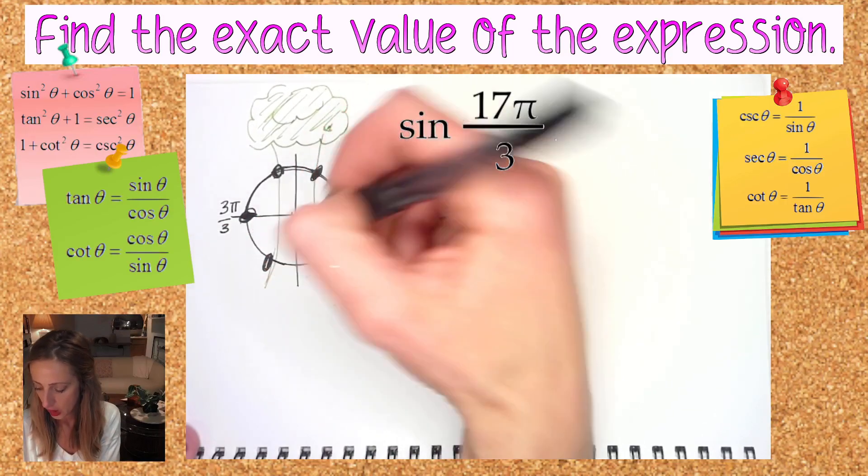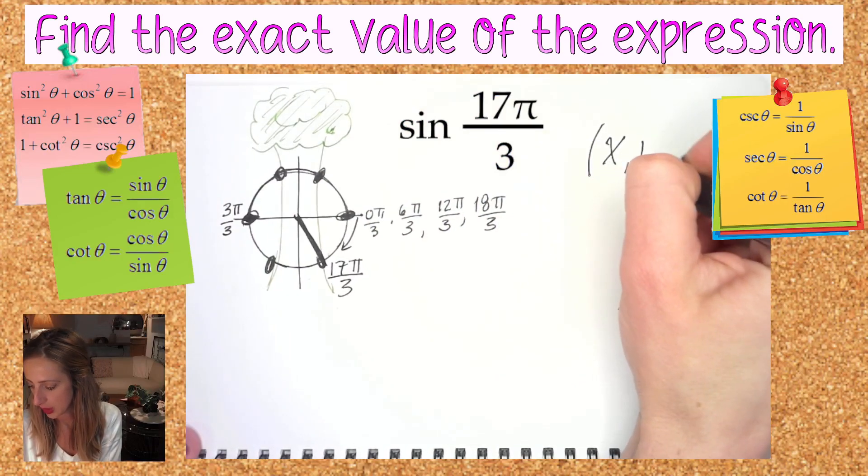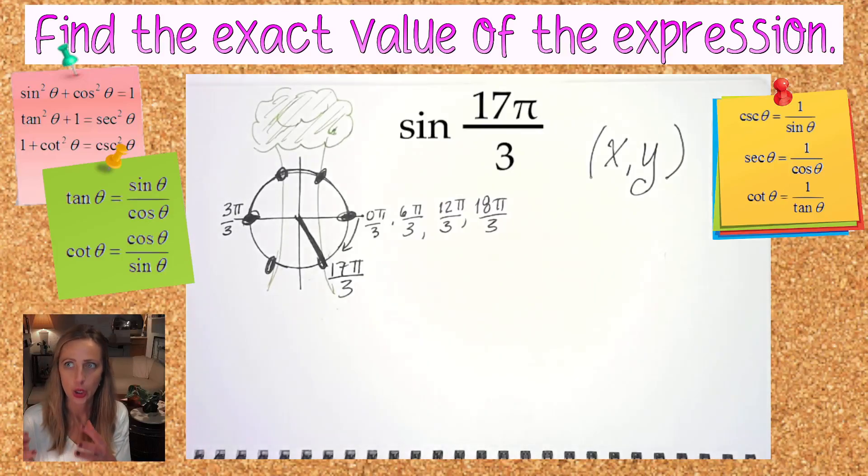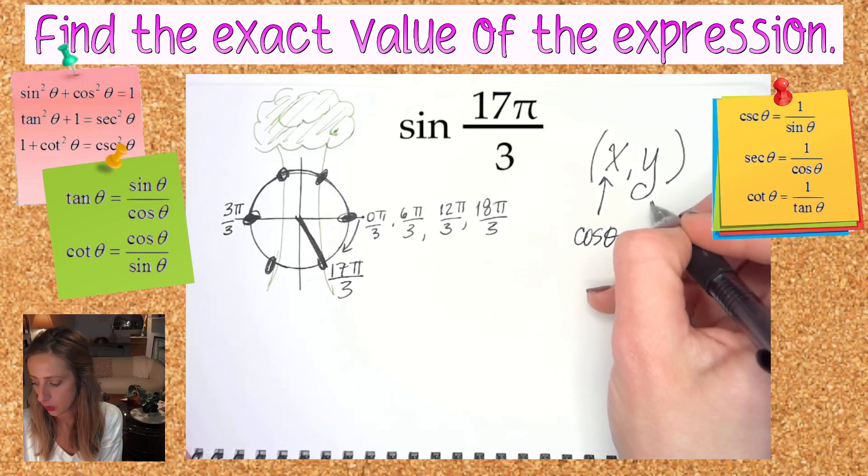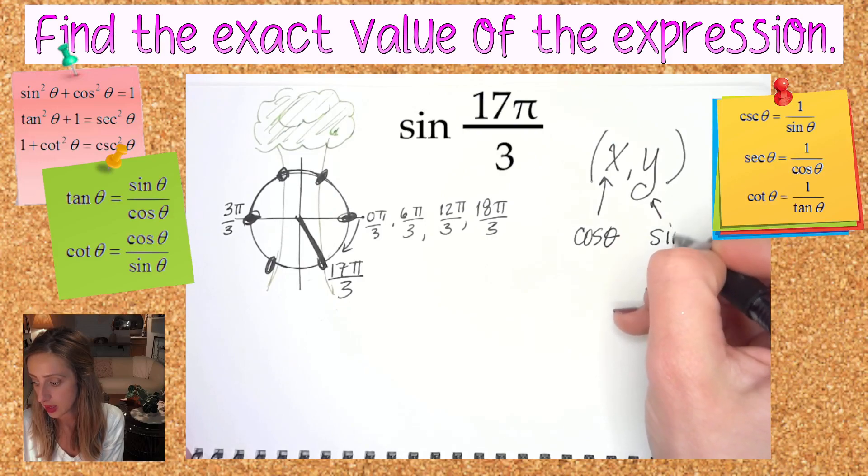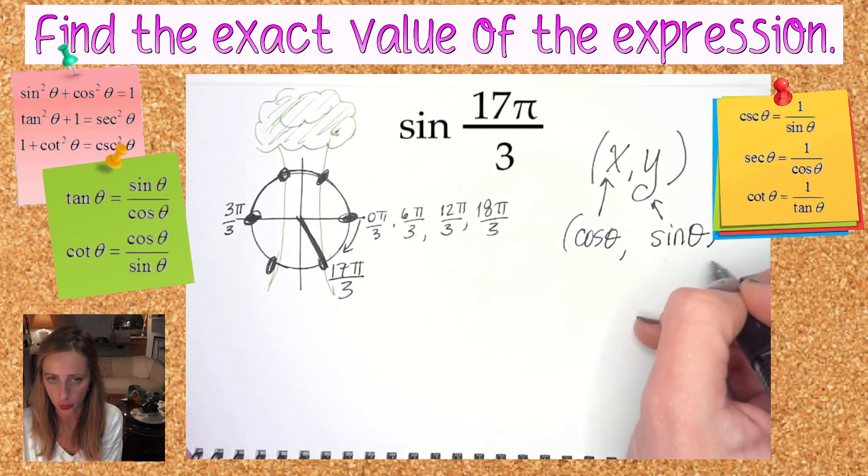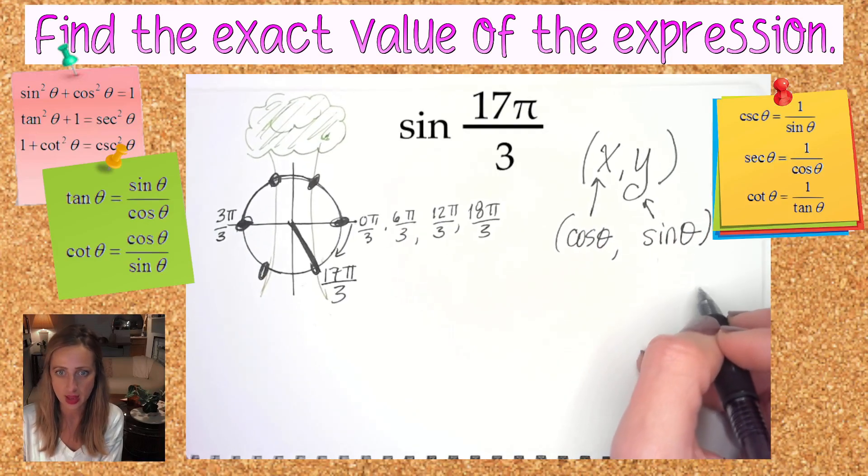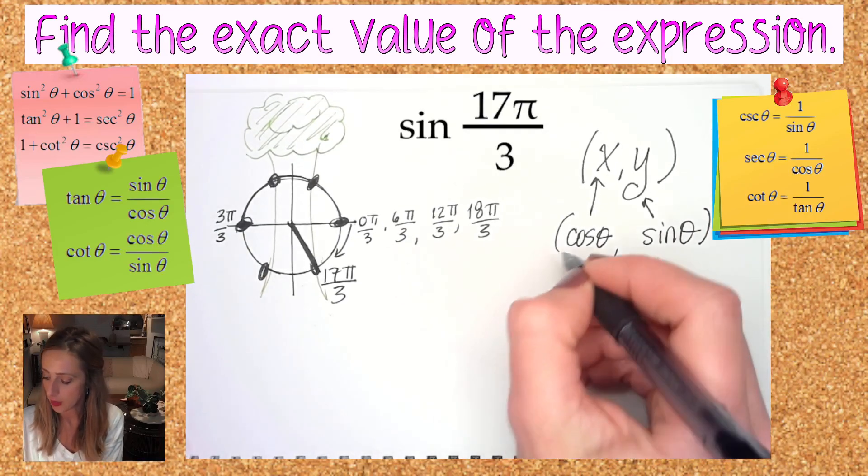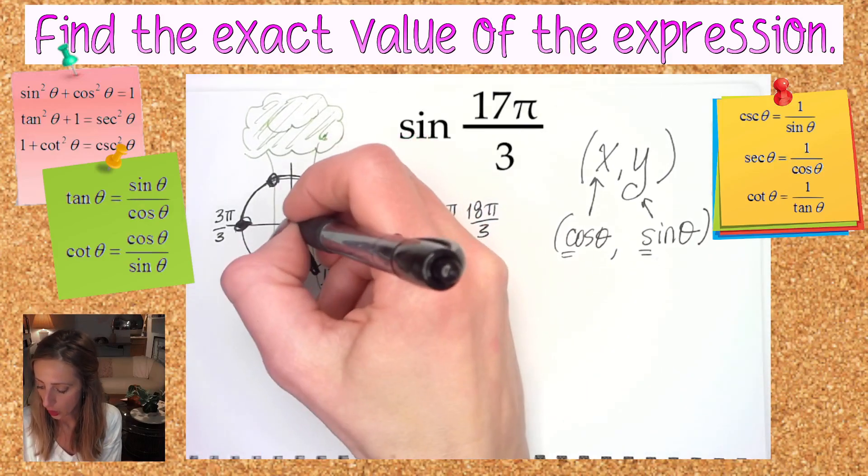Well now that you know where 17π over 3 is, what do we do with that? Well we're looking for the sine. Hopefully everyone knows that we consider the x y ordered pairs when we're referencing the unit circle. X Y, x is representative of the cosine of an angle and y is representative of the sine of an angle. Some people remember this as it almost spells out the word cosine, so cosine. Other people remember it because it's in alphabetical order.